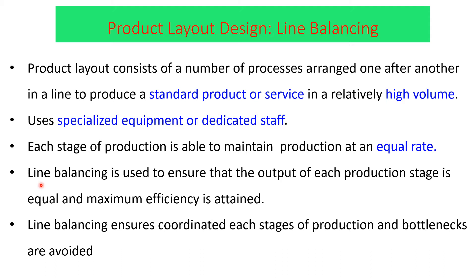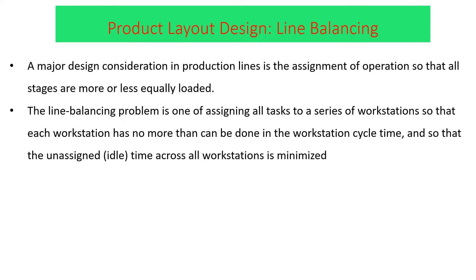Line balancing coordinates each stage of production, minimizes bottlenecks, or avoids bottlenecks by making the flow of activities have an equal rate. A major design consideration in a production line is the assignment of operations so that all stages are more or less equally loaded.